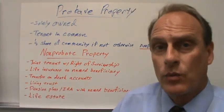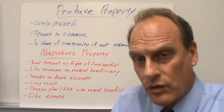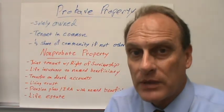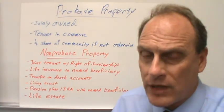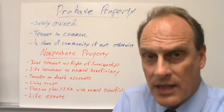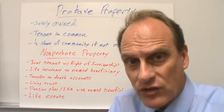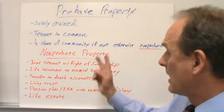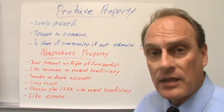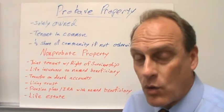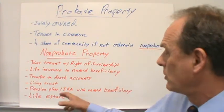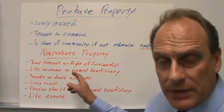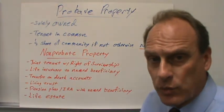A living trust — when you establish a trust while you're living and set money aside, the trust will control what happens to that property upon your death, not the probate court and not your will. It's the trust instrument that says how that property will be disposed upon your death. Pension plans and IRAs are also going to be non-probate assets insofar as they go to a named beneficiary, very much like life insurance — it doesn't have anything to do with what happens in probate court.